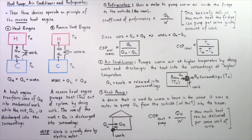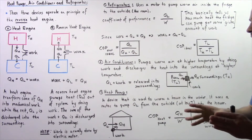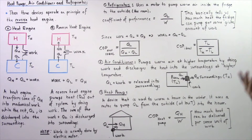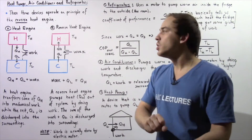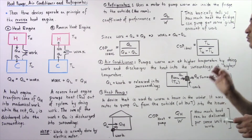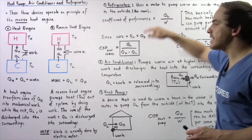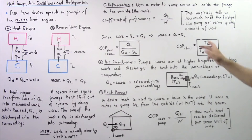Refrigerators essentially use a motor to pump warm air inside the fridge to the outside — for example, the room. Inside the fridge we are at a lower temperature, and the outside of the fridge, the room, is at a higher temperature. An electric motor does work to pump heat from inside the object, which is at a lower temperature, to the outside, which is at a higher temperature. We define the coefficient of performance as the ratio of the amount of heat pumped out of the fridge divided by the work done by the motor to pump that heat. This ratio basically tells us how much heat the fridge can pump per some given unit of work.